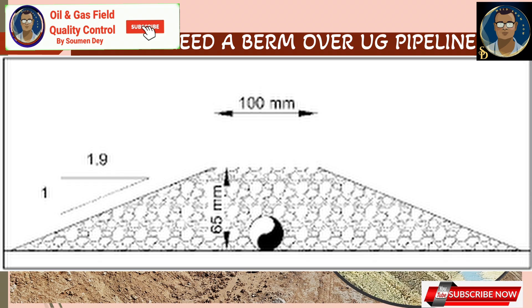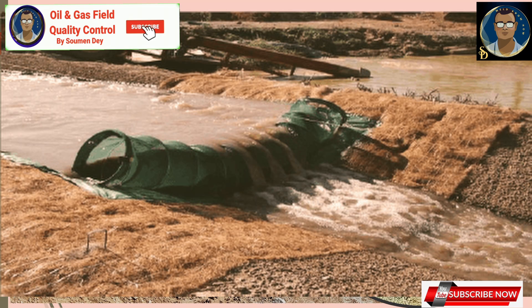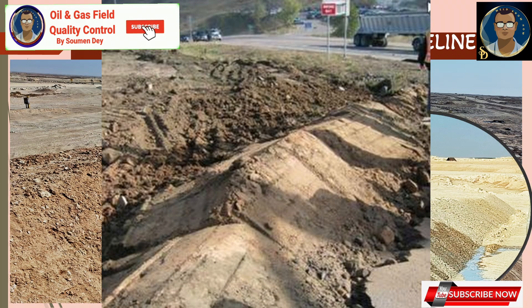Some of the main purposes of forming a berm over the pipeline include erosion and sediment control. Berms intercept and divert surface water runoff, preventing it from flowing directly onto or around the pipe trench, thus protecting the pipe. This reduces the potential for soil erosion and sediment transport. Berms can also trap sediment by slowing down the flow of runoff, allowing sediment particles to settle out.